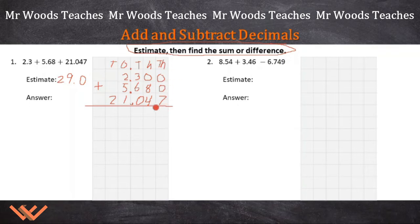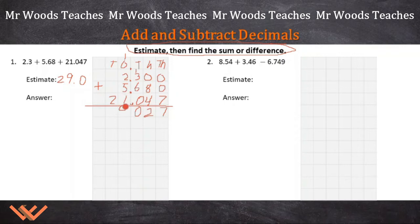So 0 plus 0 plus 7 is 7. 8 plus 4 is 12, so I write 2 and carry the 1. 3 and 6 is 9, plus that 1 is 10 — write 0 and carry 1. 10 tenths is just 1 whole. So 1 plus 2 is 3, plus 5 is 8, plus 1 more is 9, and 2 here. Bring down that decimal point. My estimate of 29 is very close. I did pretty well on that.